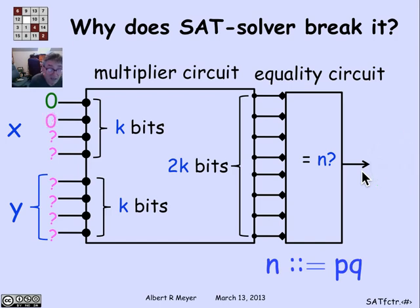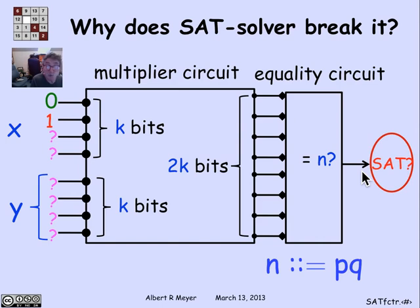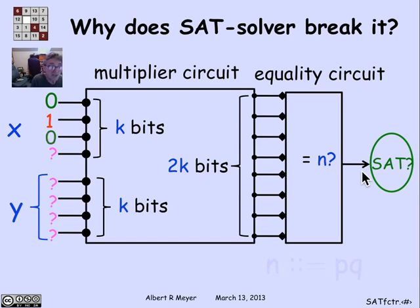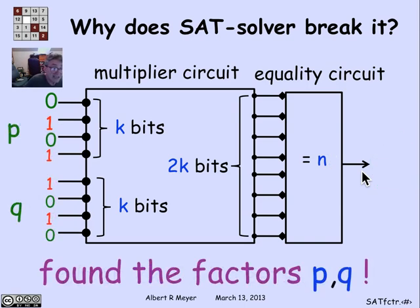Next, try setting the second input bit to 0 and ask the SAT tester: is it possible to fill in the remaining digits to get the two numbers x and y that multiply to produce n, outputting 1? The SAT tester says no — this circuit is unsatisfiable. You can't get a 1 out of it anymore. That tells me I have to set the second bit to 1 in order to have factors of n where x and y multiply to give n. Then go to the third bit, ask whether 0 works. The SAT tester says yes, so fix 0. I now know the first three bits of x, and continuing, after 2k SAT tests I know exactly what p and q are — I've found the factors.